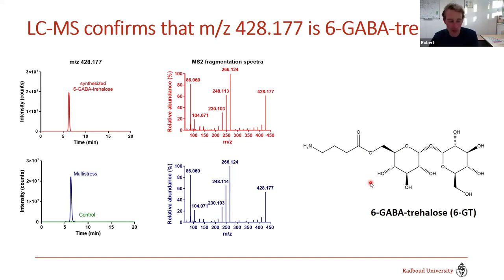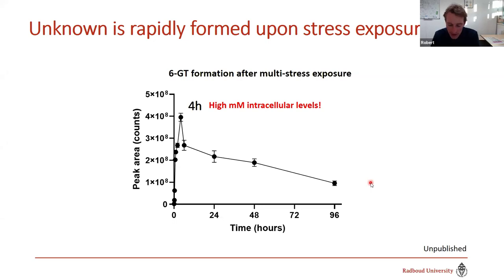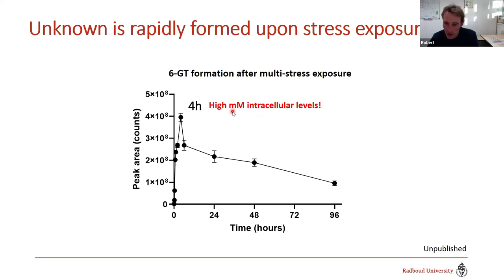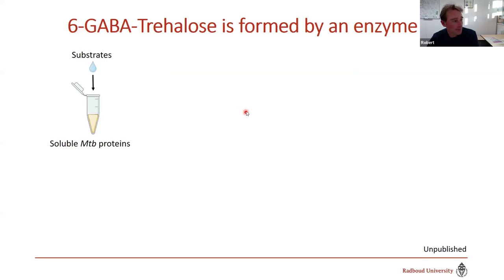Now we knew this metabolite might be involved in virulence and forms only under certain stress conditions. We quantified it: within 10 minutes of multi-stress exposure, MTB begins producing large amounts, peaking after four hours. Back-of-the-envelope calculations suggest intracellular levels of 20–30 millimolar — making it probably one of the most abundant molecules present at that point.